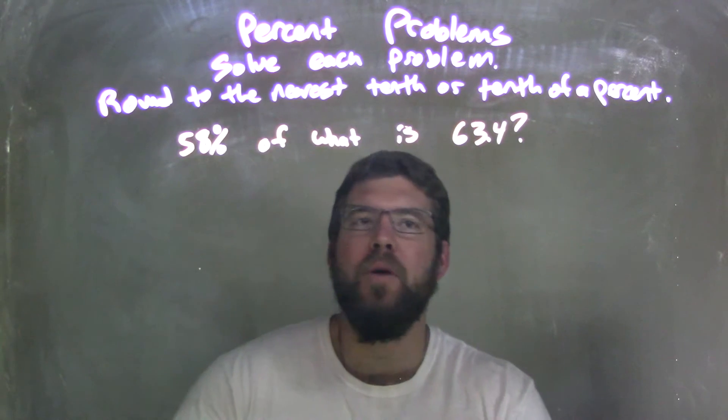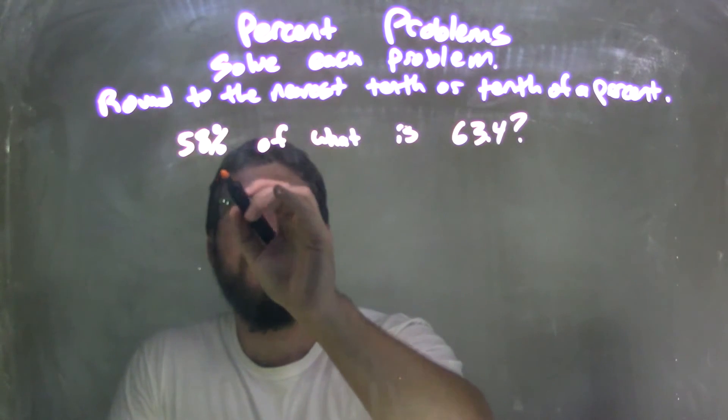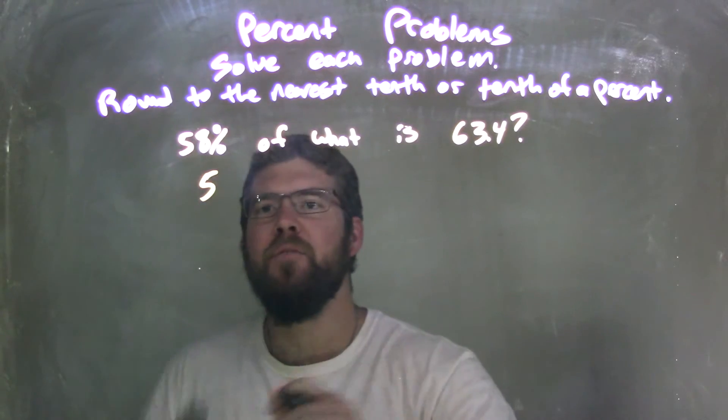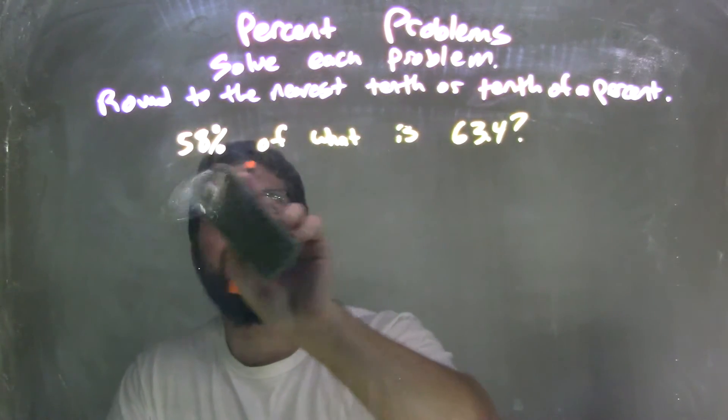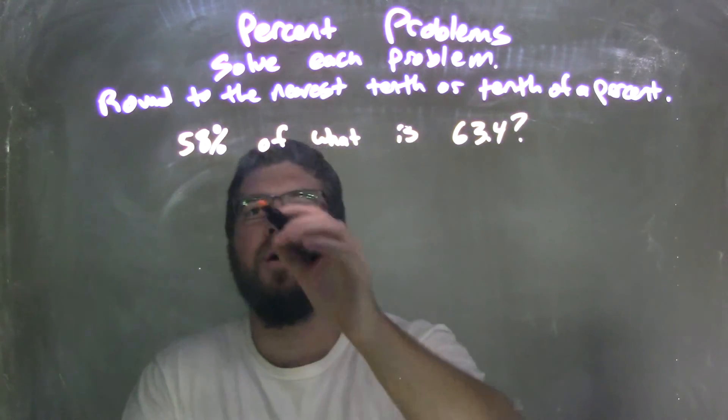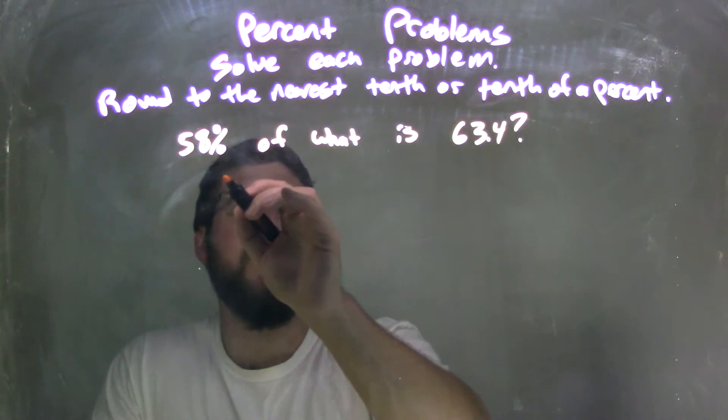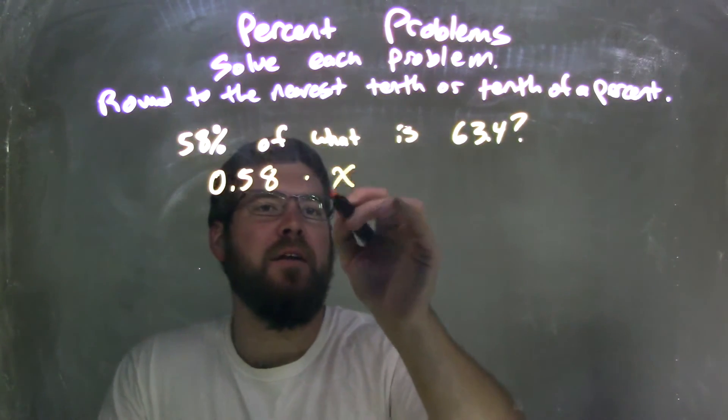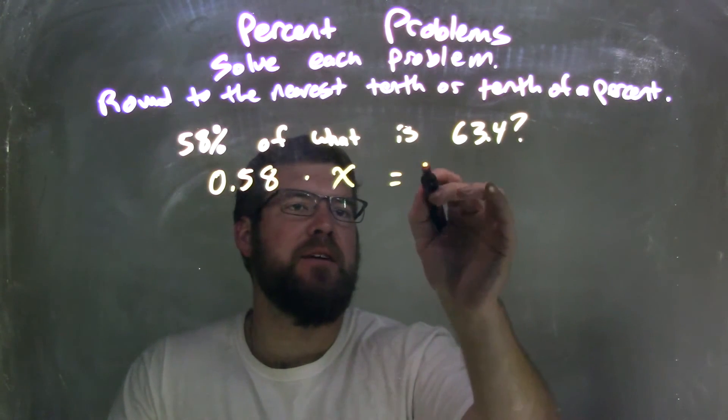So what they're asking us here is we look at 58%. So 58% of what? If I convert that to a decimal, we're going to convert that to a decimal first, that's 0.58. So 58% of what, our variable, is 63.4. So that's really what they're asking us here.